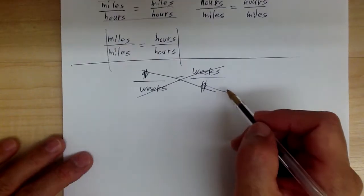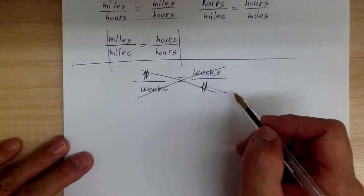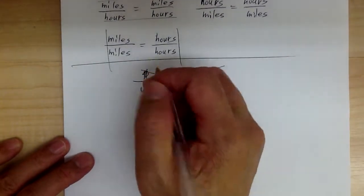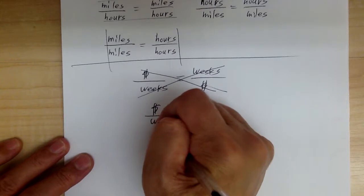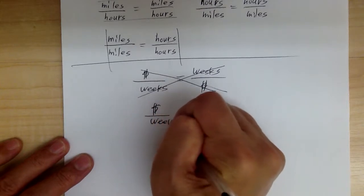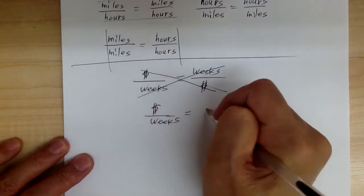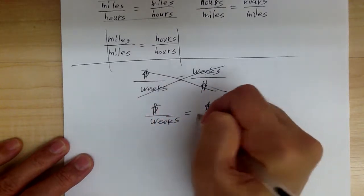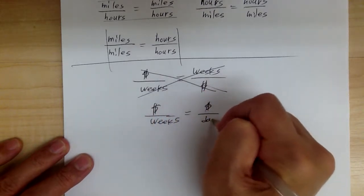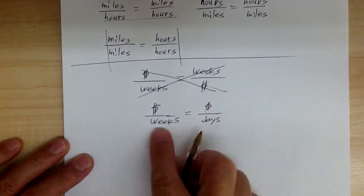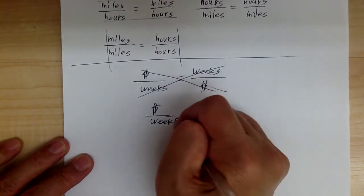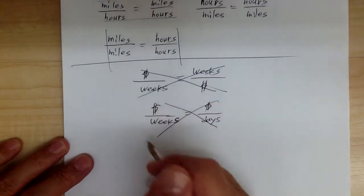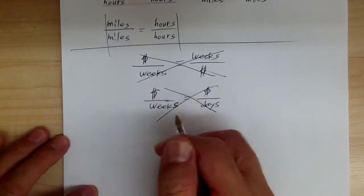Also, when you're doing the proportion, make sure the labels are the same type. For example, you have a dollar per week and you have a dollar per day. This is no good because they are not the same kind — this is weeks, this is days. So this one is no good also. Just be aware of that.